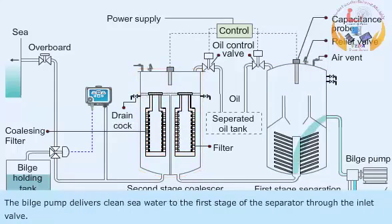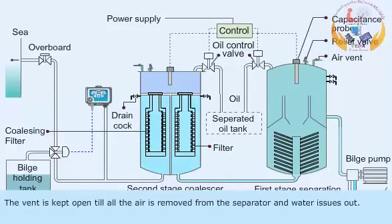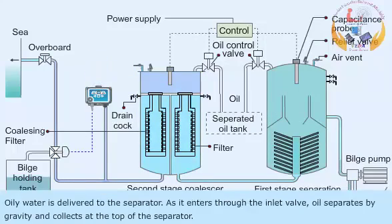The bilge pump delivers clean sea water to the first stage of the separator through the inlet valve. The vent is kept open till all the air is removed from the separator and water issues out. Oily water is then delivered to the separator. As it enters through the inlet valve, oil separates by gravity and collects at the top of the separator.